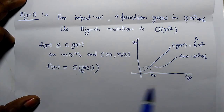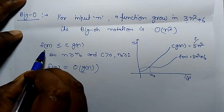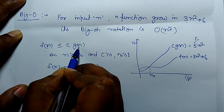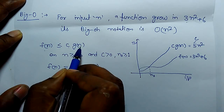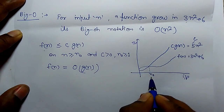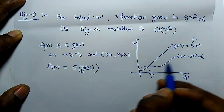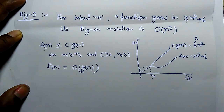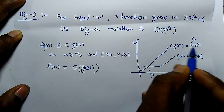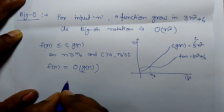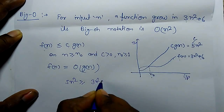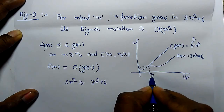How can we find it? For a function f(N), there should be a constant value C and a function g(N), such that c·g(N) is greater than or equal to f(N) for a particular value of C and some threshold value N₀. After that threshold, c·g(N) will always be greater than f(N). For example, f(N) = 3N² + 6. Taking C = 5 and g(N) = N², we get 5N² ≥ 3N² + 6 for some N₀.